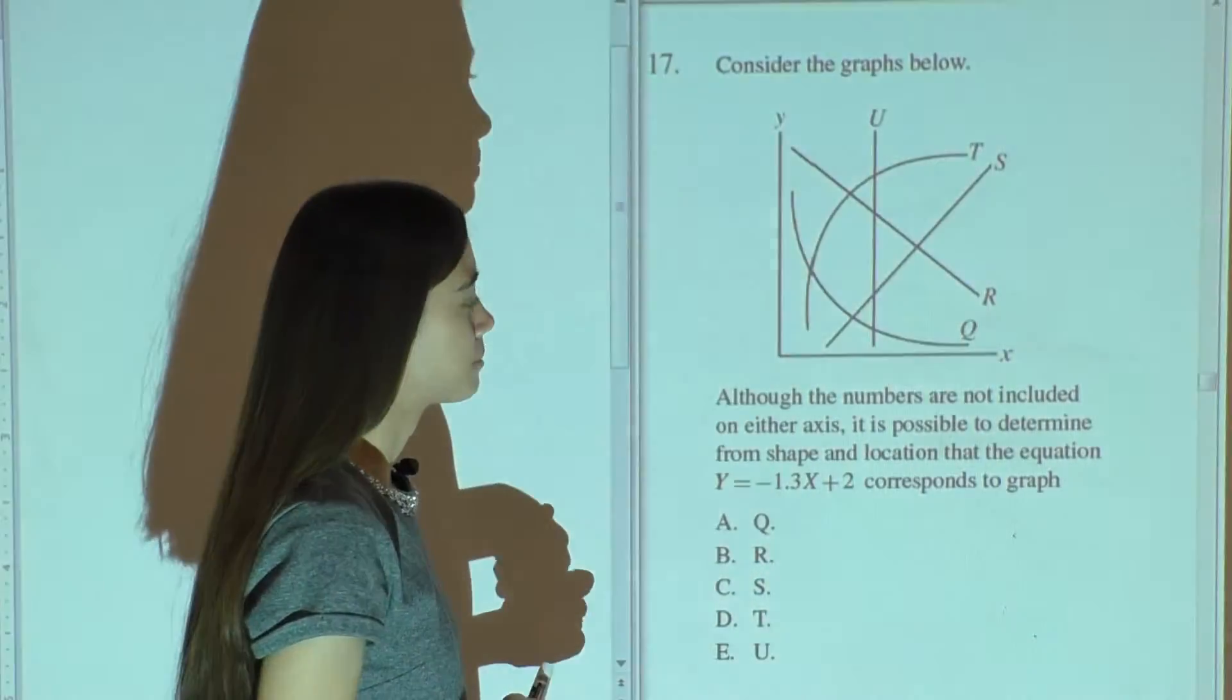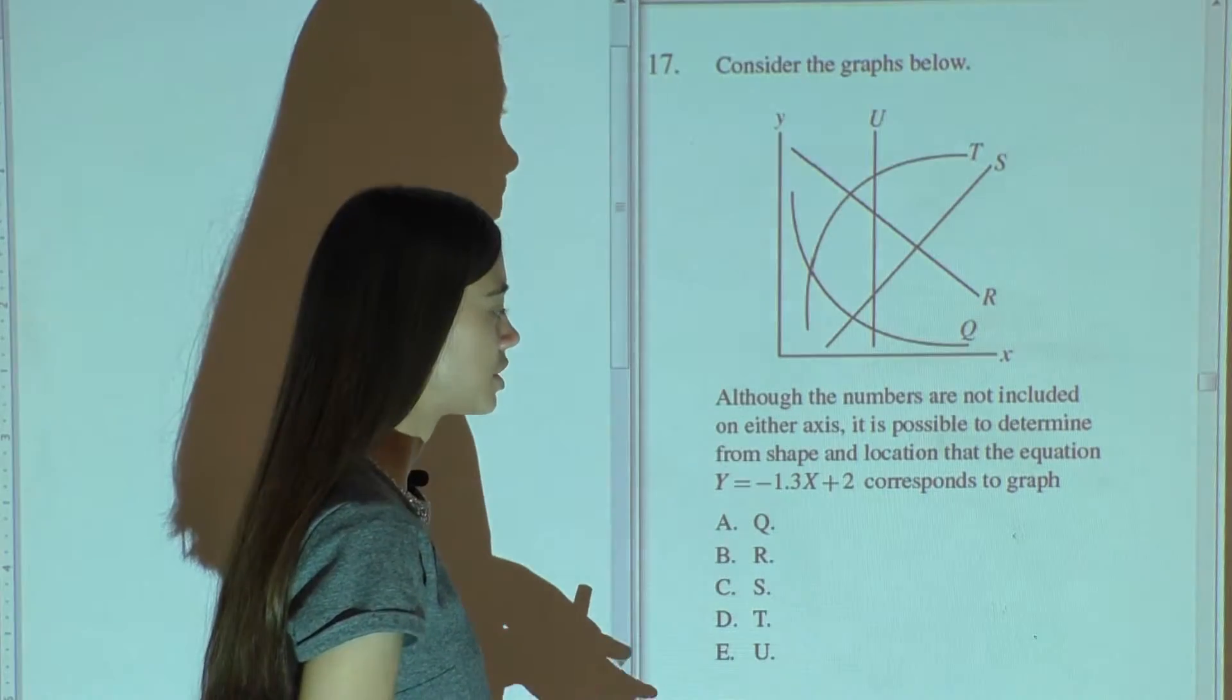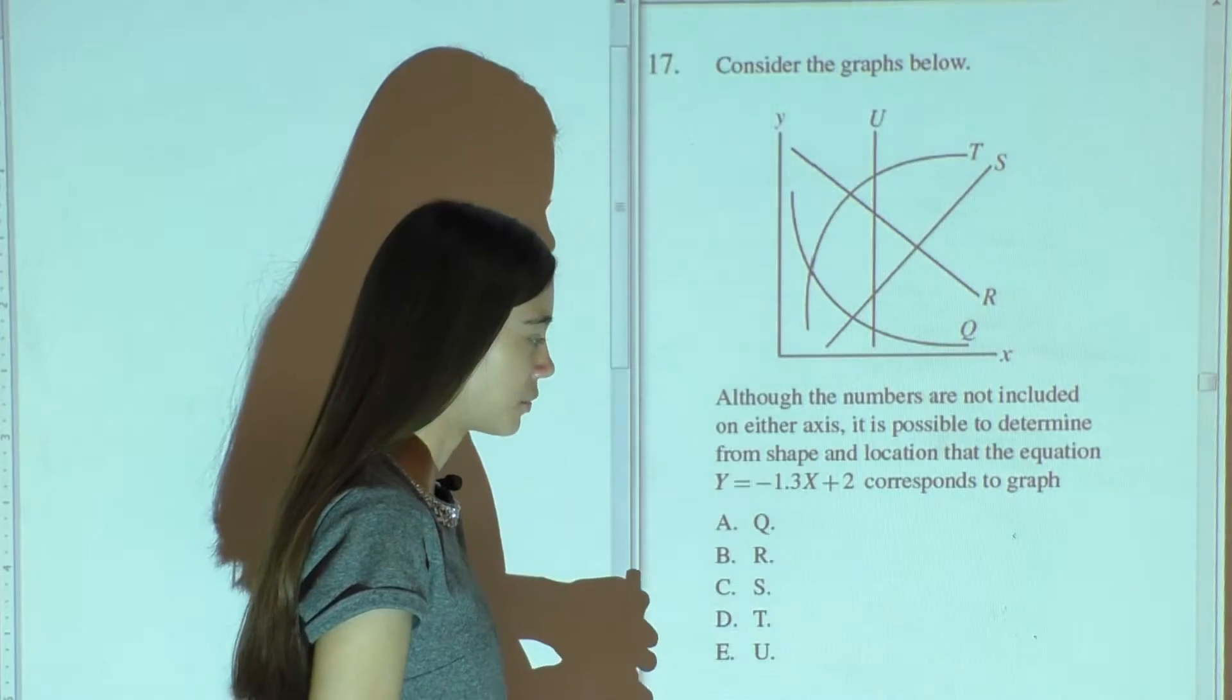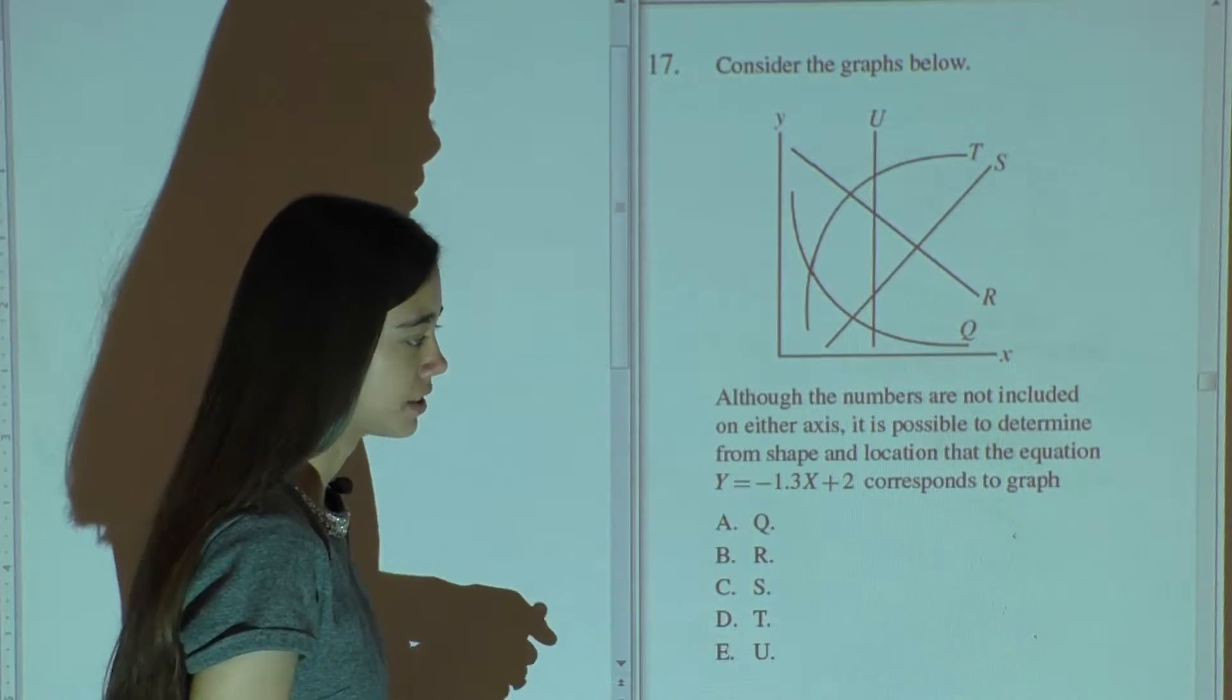Number 17 says, consider the graphs below. Although the numbers are not included on either axis, it is possible to determine from shape and location that the equation y equals negative 1.3x plus 2 corresponds to graph,